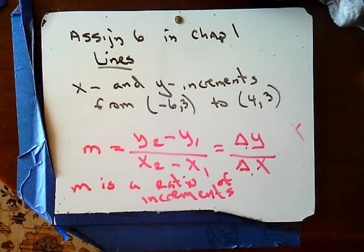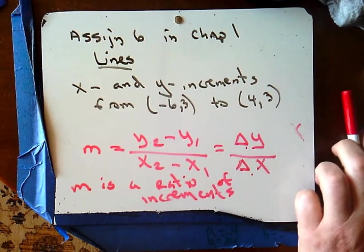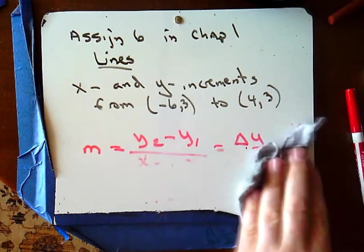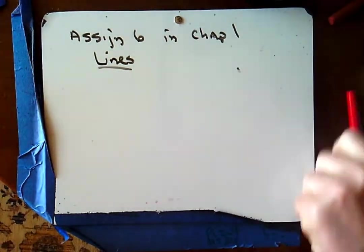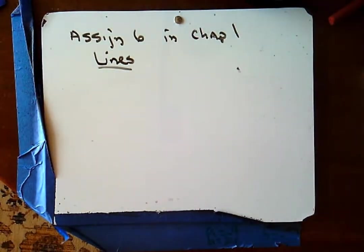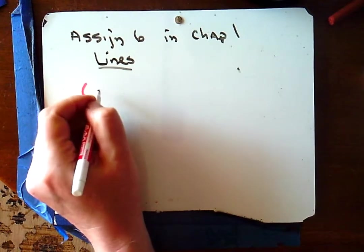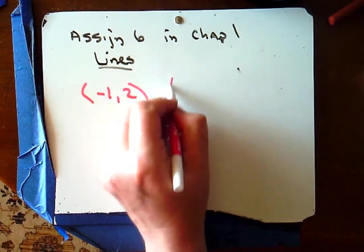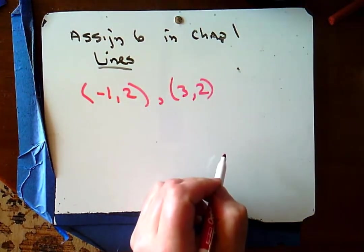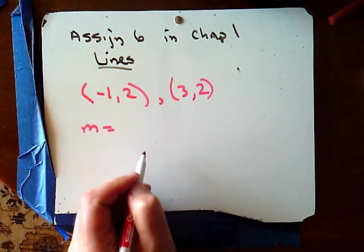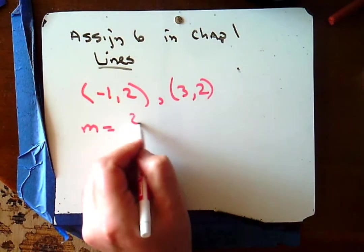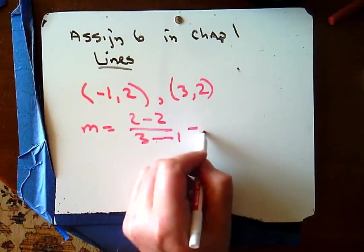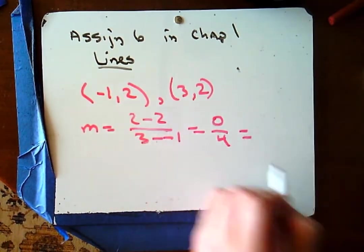Where have we seen increments before? The slope formula — slope is the y increment over the x increment. Slope is the change in y values with respect to the change in x values, so we can say slope is a ratio of increments. We'll be talking a lot about slope this year.